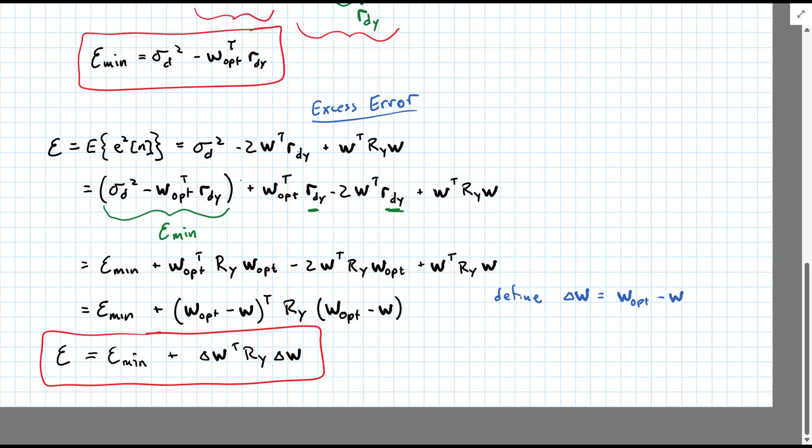Well, suppose that delta W, our degree of deviance from our optimal solution, actually was an eigenvector of R_y.